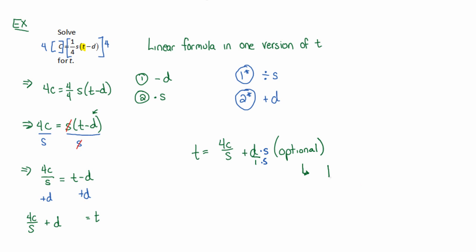And so, if you did this optional, which is not required, you would get t is equal to 4c over s plus ds over s. These two fractions now have the same denominator, so you can add them up. 4c plus ds over s. Both of these are equivalent. So this answer and this answer right here, they're the same answer. It's just they look slightly different, but they're the same.